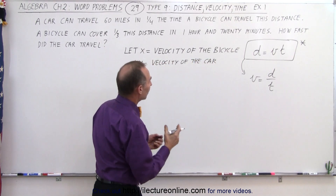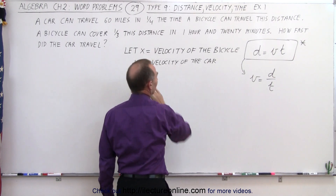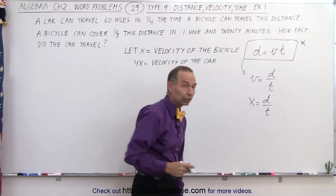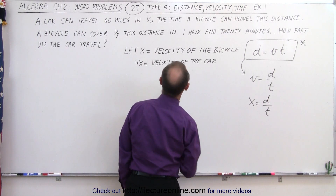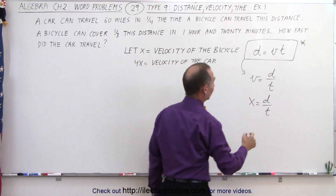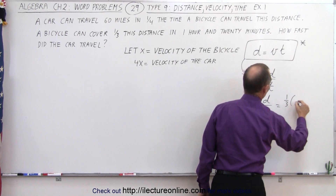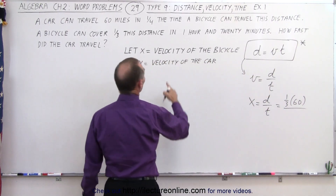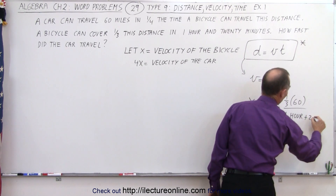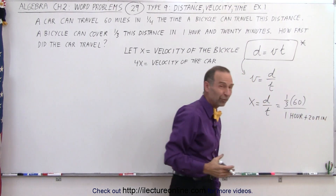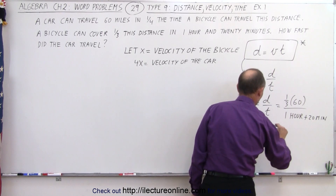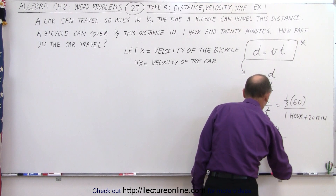We can find the velocity of the bicycle by plugging in x: x equals the distance traveled by the bicycle divided by the time the bicycle took. The bicycle covers one third of 60 miles, so the distance is 20 miles, and it does so in one hour and 20 minutes. So x equals one third of 60 divided by one and one third hours.